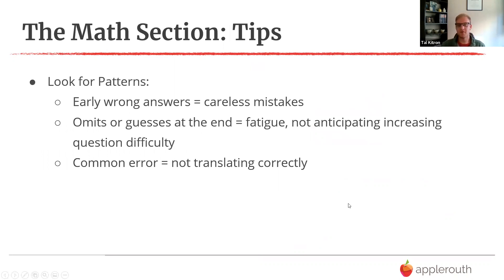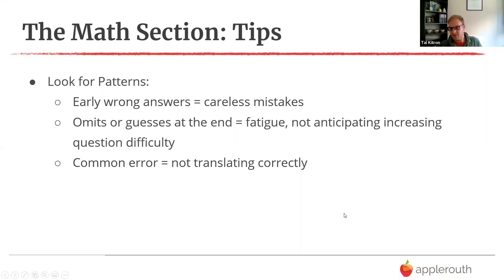When looking at your results, always look for patterns. Wrong answers early often mean careless mistakes or a forgotten topic. Leaving things at the end could be fatigue — mental stamina is a huge part of this test — or questions getting harder, or not skipping to easier ones, or timing. Biggest errors: not translating correctly, looking at the x-value instead of y, or simple little mistakes. Translation from words to math is definitely a big part of the SAT.